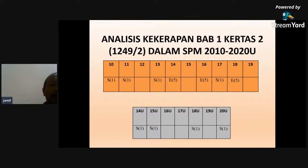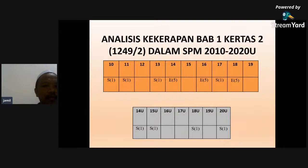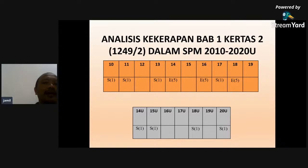Yang ini adalah analisis soalan bab satu bagi tingkatan empat, daripada tahun 2010 sampai 2020 ulangan. Dalam analisis yang saya buat, 2010 ada soalan struktur, 2011 apa ada, 2012 tak ada, 2013 struktur, 2014 naik esei, 2015 tak ada, 2016 naik esei, 2017 naik esei, 2018 naik esei, 2019 tahun lepas tak ada. Maka 2020 berkemungkinan besar akan ada - yang akan diambil pada tahun 2021 nanti iaitu pada 22 Februari berkemungkinan besar akan ada soalan satu soalan daripada bab satu.